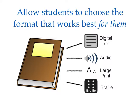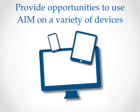Students who need AIM should lead the selection of the specialized format that works best for them. Based on their need, allow them to try at least two, if not all four formats: digital text, audio, large print, or braille. If possible, provide opportunities for students to use AIM on more than one device. For example, if the school distributes tablets, give the student access to AIM on a laptop. This will prepare the student to use AIM across devices as they advance from school to school and ultimately to post-secondary settings.